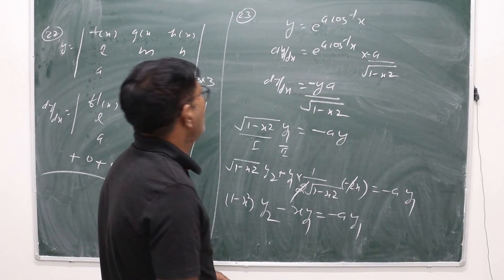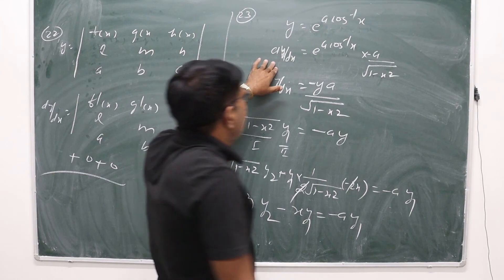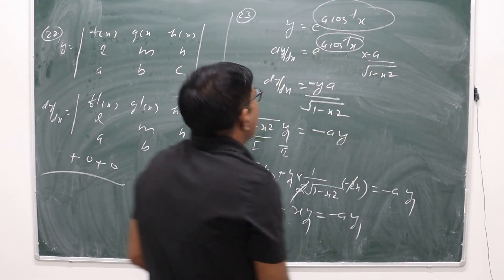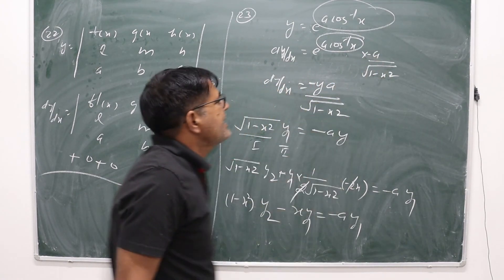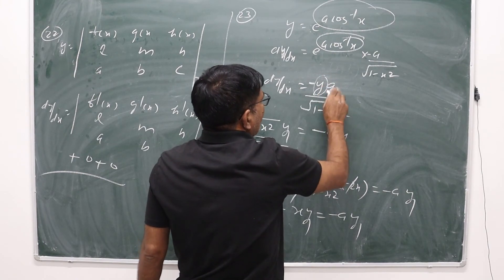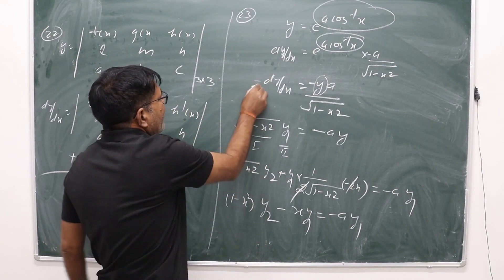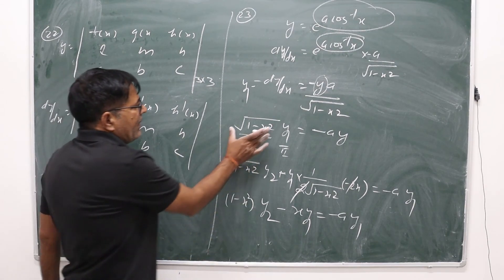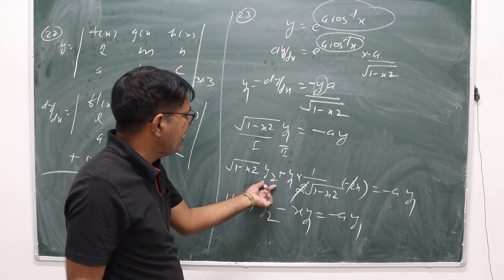Question 23: y = e^(a·cos⁻¹x); find the second-order derivative. First, dy/dx = e^(a·cos⁻¹x) · a · (-1/√(1-x²)) = -ay / √(1-x²). Writing dy/dx as y₁ and cross-multiplying: √(1-x²) · y₁ = -ay. Now differentiate both sides again using the product rule on the left side.